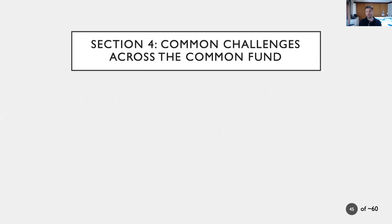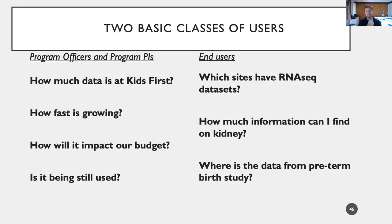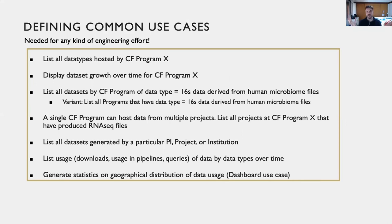What are the common challenges across the Common Fund? There are two basic classes of users we need to serve with our data ingest pipeline. Program officers and program PIs want to know: how much data is at Kids First, how fast is it growing, how will it impact our budget, is it still being used? End users want to know: which sites have RNA-seq datasets, how much information can I find on kidney, where's the data from the preterm birth study? So we've been putting effort into defining a common set of use cases: listing all datasets hosted by Common Fund program X, listing all projects at CF program X that have produced RNA-seq files, generating statistics on geographical distribution of data usage. These are all individual use cases we're trying to help individual DCCs and collectively the Common Fund address with technological development.